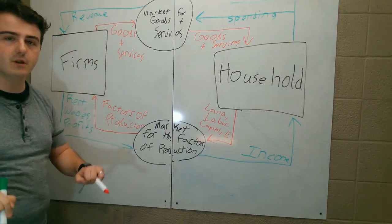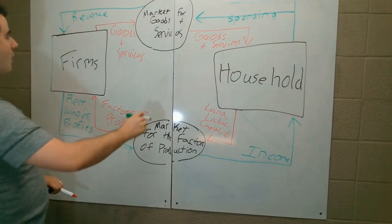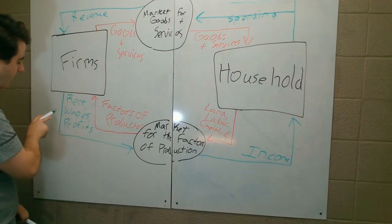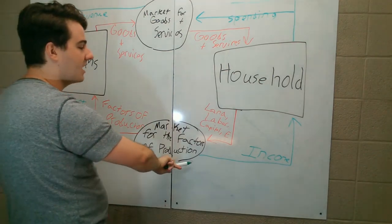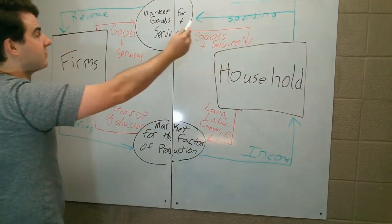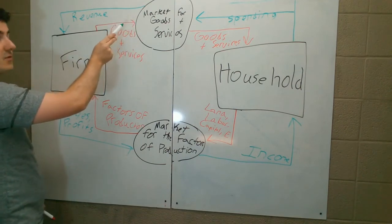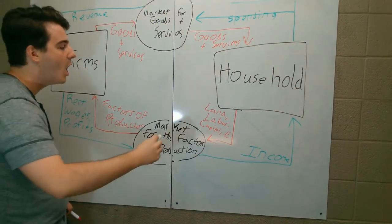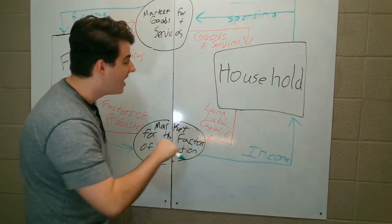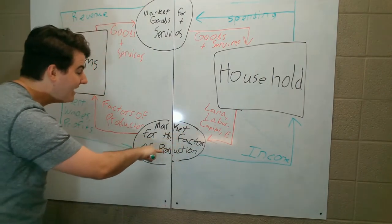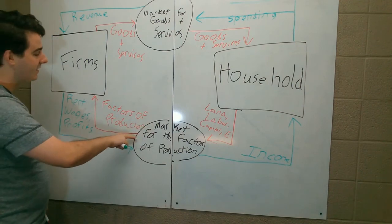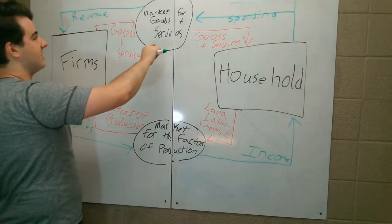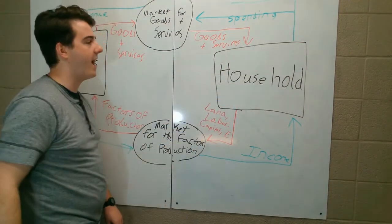So we've got a circular flow model for an economy. Our big circle on the outside is the flow of money. It leaves the firm in the form of rent, wages, and profits, goes into the market for factors of production, and comes out into the household as income. It leaves the household in the form of spending, goes into the market for goods and services, and comes out in the form of revenue for firms. On the inside, leaving the households are the factors of production — land, labor, capital, and entrepreneurship — going into the market for factors of production and coming out the other side into the firms. And in return, the firms send us goods and services, which go into the market for goods and services and come out into the household.